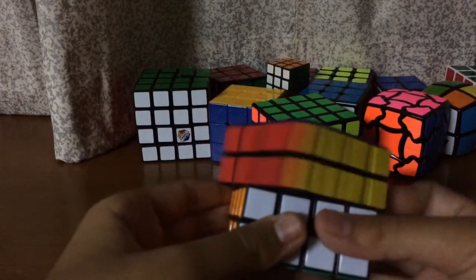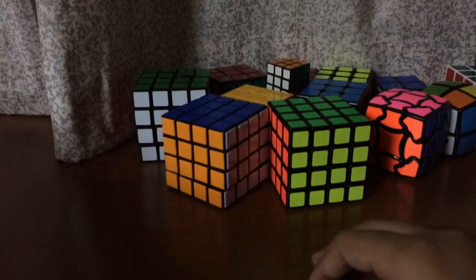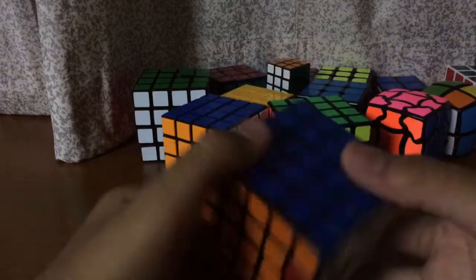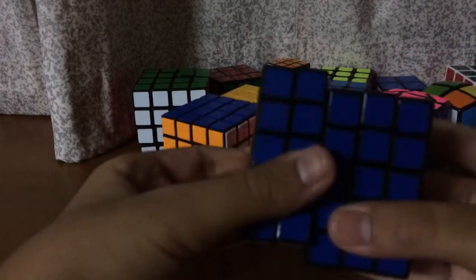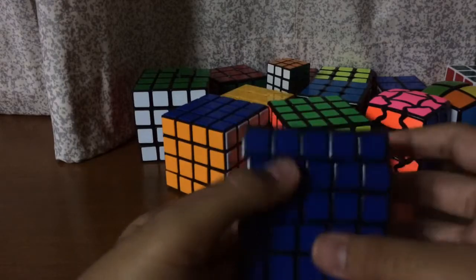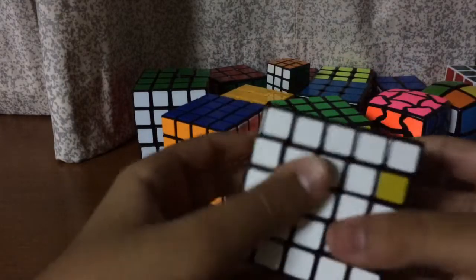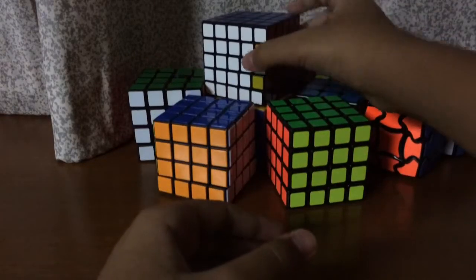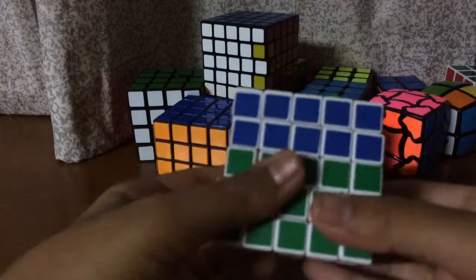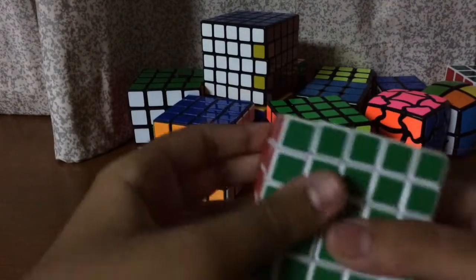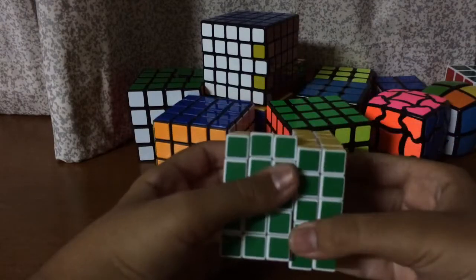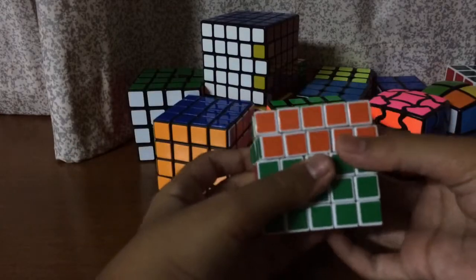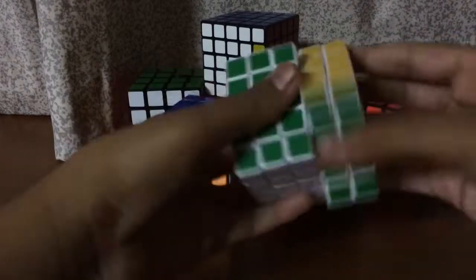Now the 5x5, this is the Shengshou 5x5. I don't know how to solve it, I mean I know how to solve it but it takes me so much time to solve it. I need to practice more on 5x5. And this dollar 5x5 cube, in Thailand they sell very cheap cubes like $1 or $2 and it moves good but I don't know why I don't buy them. See it moves good.